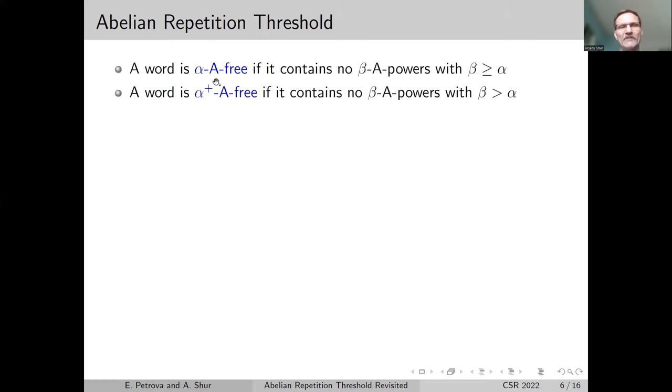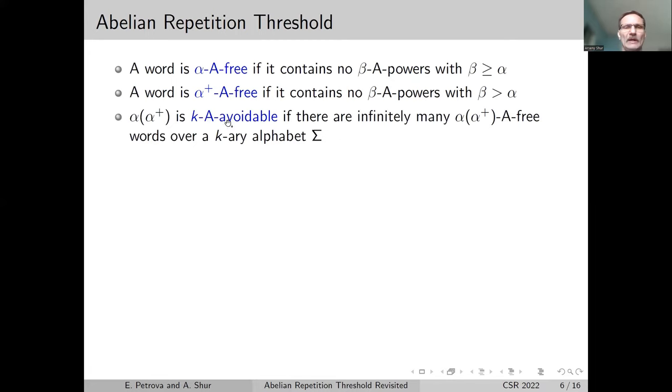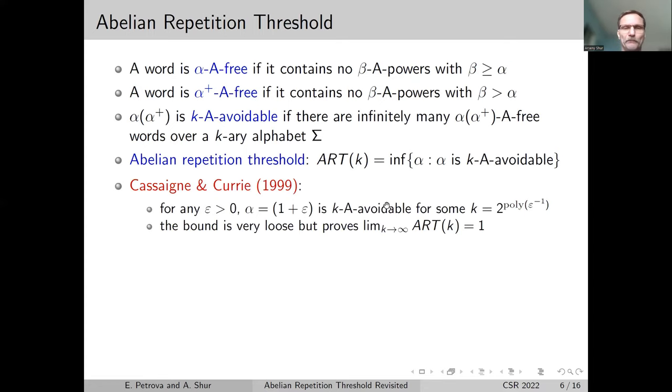A word is α-A-free if it contains no abelian powers with exponent at least α, and α⁺-A-free if it contains no abelian powers with exponent strictly greater than α. We have the counterpart of repetition threshold, which is abelian repetition threshold ART(k), the infimum of α such that α is k-A-avoidable.